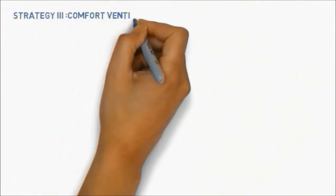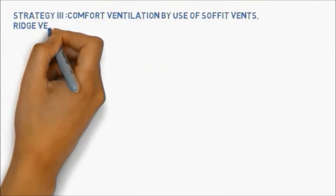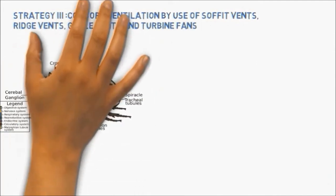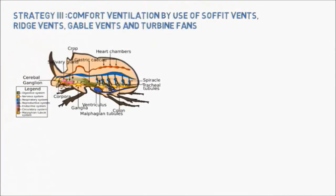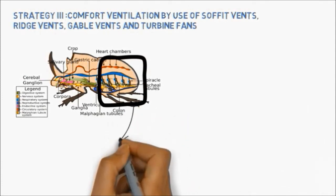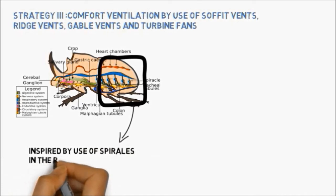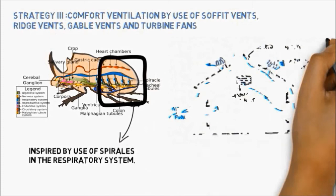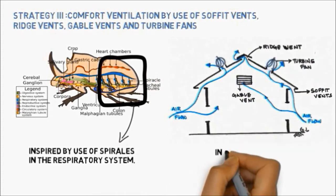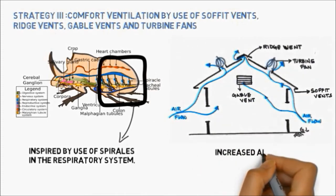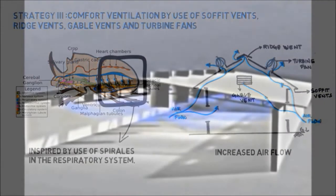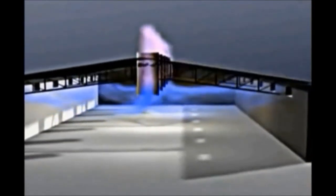Strategy 3: comfort ventilation by use of soffit vents, ridge vents, gable vents and turbine fans. This was inspired by the use of spiracles in the respiratory system. This would increase the airflow in the building. As illustrated, a steady airflow would increase the comfort level of the occupants.